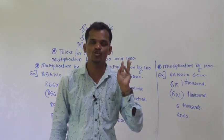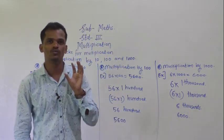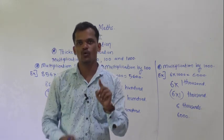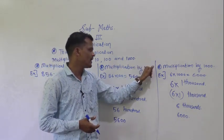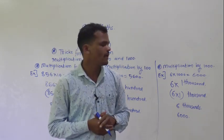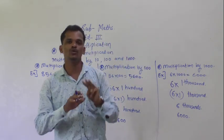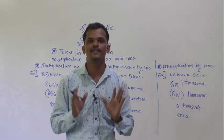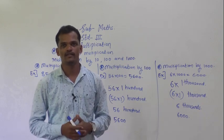So these are the tricks for multiplication by 10, 100, and 1000. When multiplying by 10, put one zero at the right of the number. When multiplying by 100, put two zeros at the right. When multiplying by 1000, put three zeros at the right. You will get the answer directly — there is no need to calculate. Thank you.